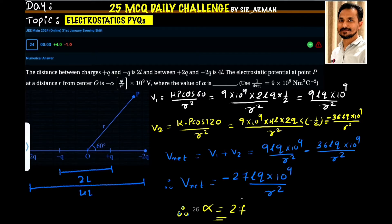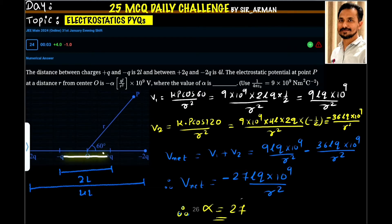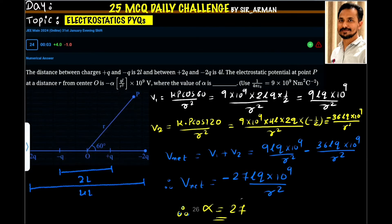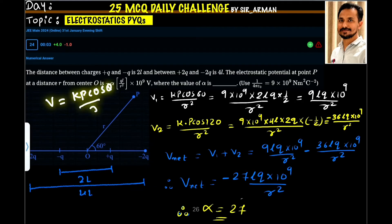We have a dipole whose dipole moment is pointing in this direction, because it is minus on one side and plus on the other. The dipole moment of this charge is pointing in this direction, and we have point P at a distance R. For a dipole, the electric potential at this point is given by V equals Kp cos theta divided by R squared.